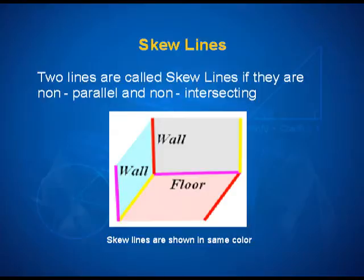Another example in this illustration: if I take a line which is along the railing of the balcony and I take a line along the stick which is lying inclined to the floor resting against a particular wall, then these two lines will also be skew lines.